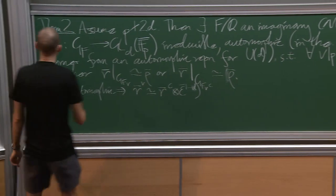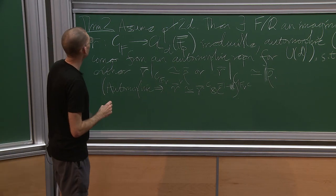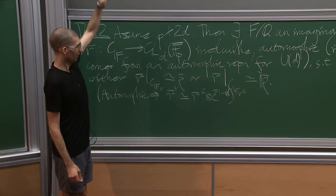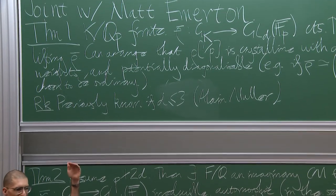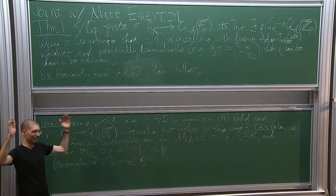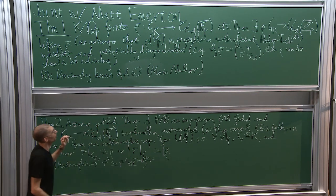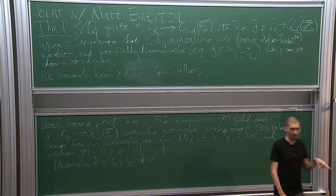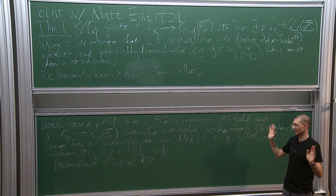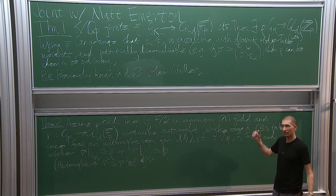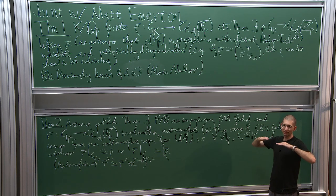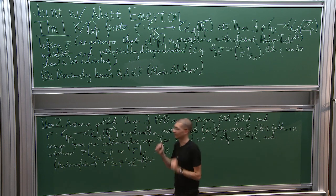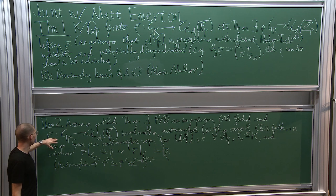Why do I care about these theorems? One remark: if p doesn't divide 2d, theorem 2 implies theorem 1, because if the Galois representation is automorphic it means it comes from an automorphic form, so it lifts to characteristic zero and in particular the local one does too. The proof of theorem 1 is actually purely local and is an input into theorem 2. All techniques known for lifting mod p representations of a global field to characteristic zero require knowing the existence of lifts everywhere locally.